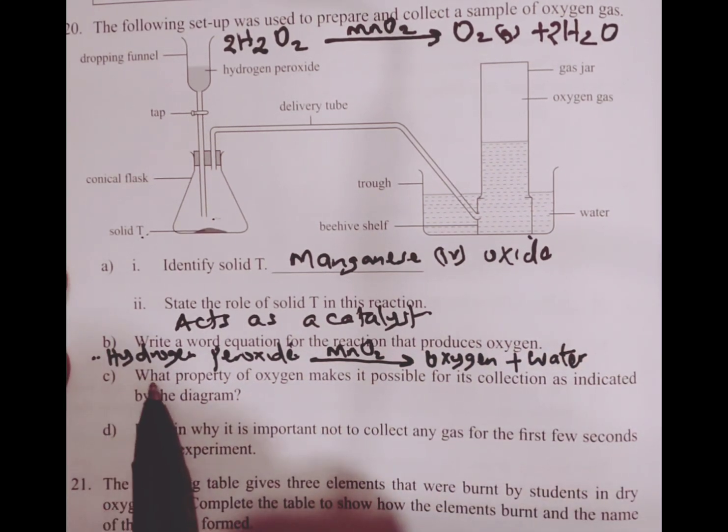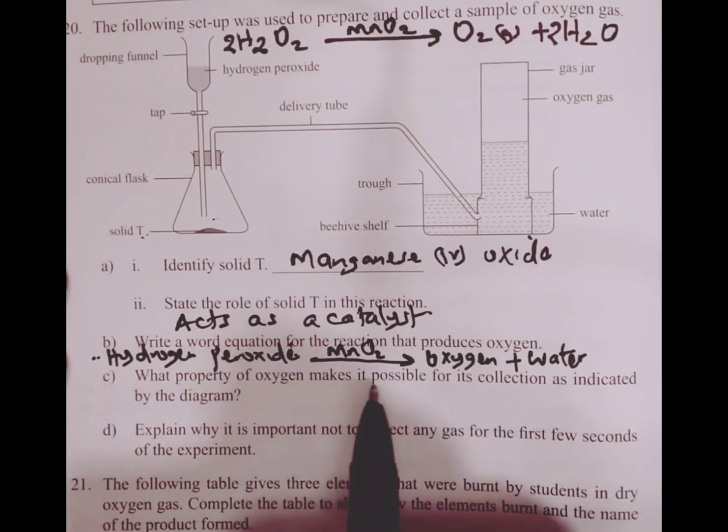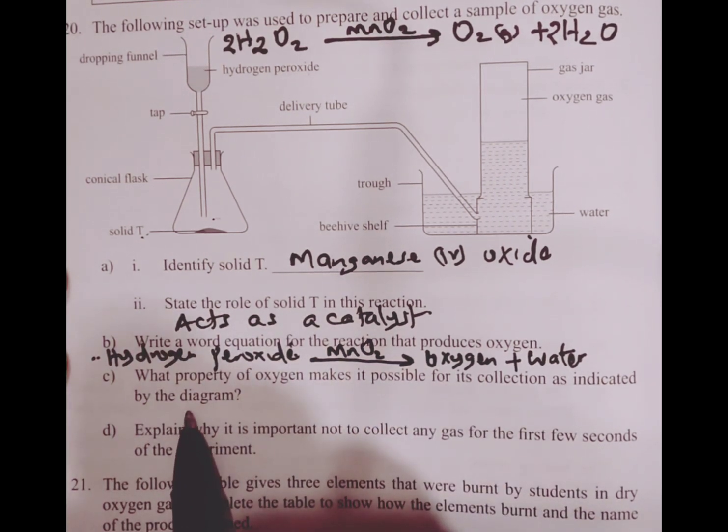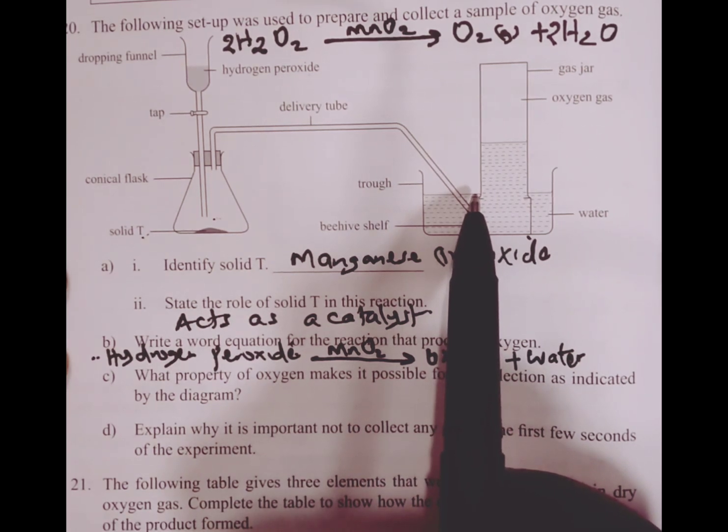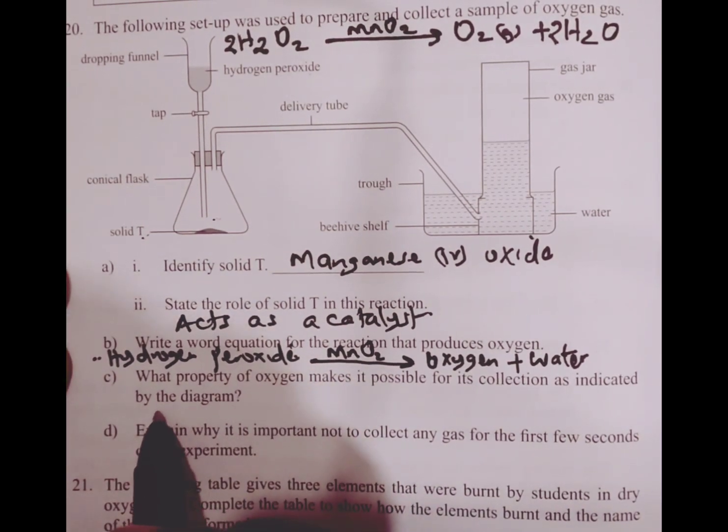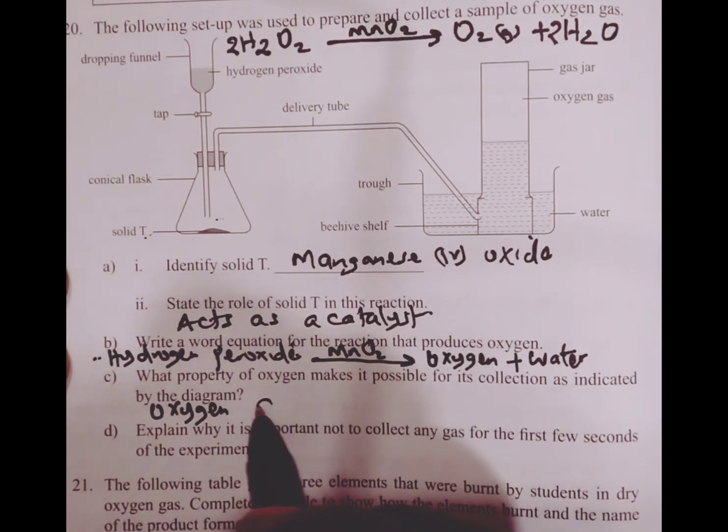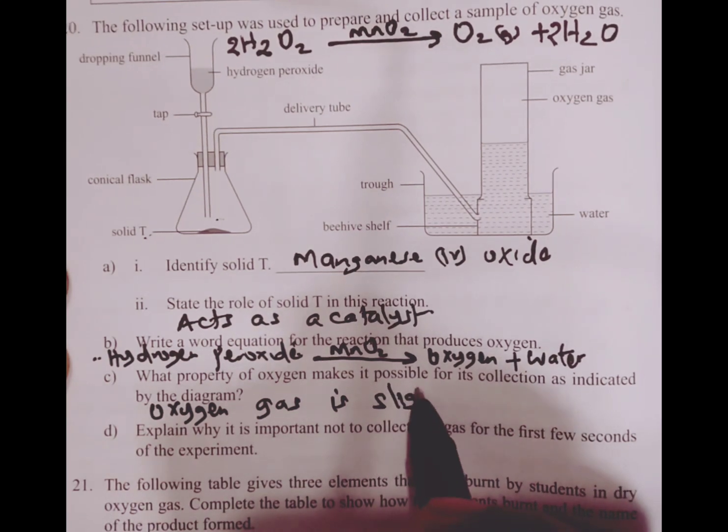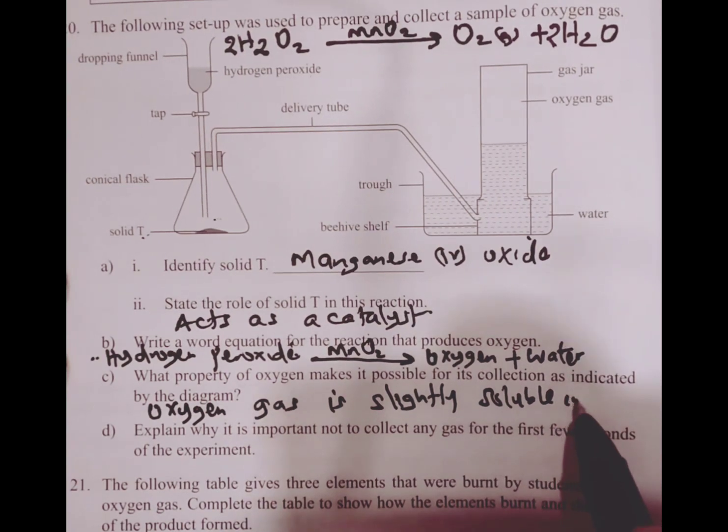Part C, what property of oxygen makes it possible for collection as identified in the diagram. Remember oxygen is collected over water because it is insoluble or slightly soluble in water.